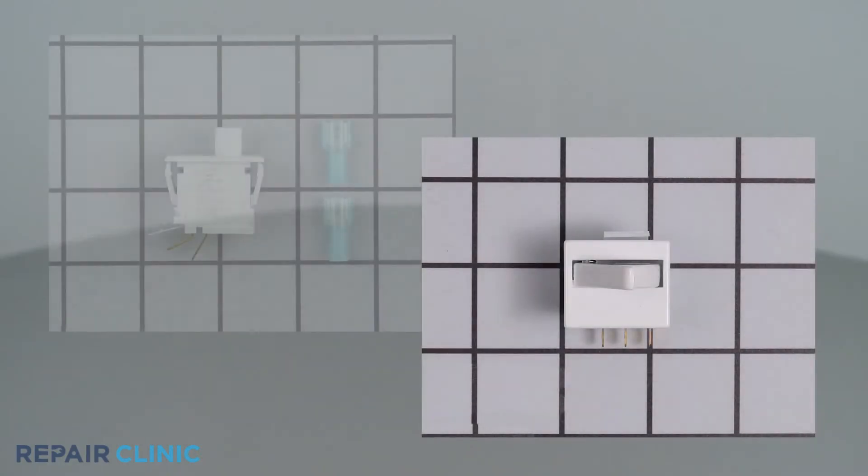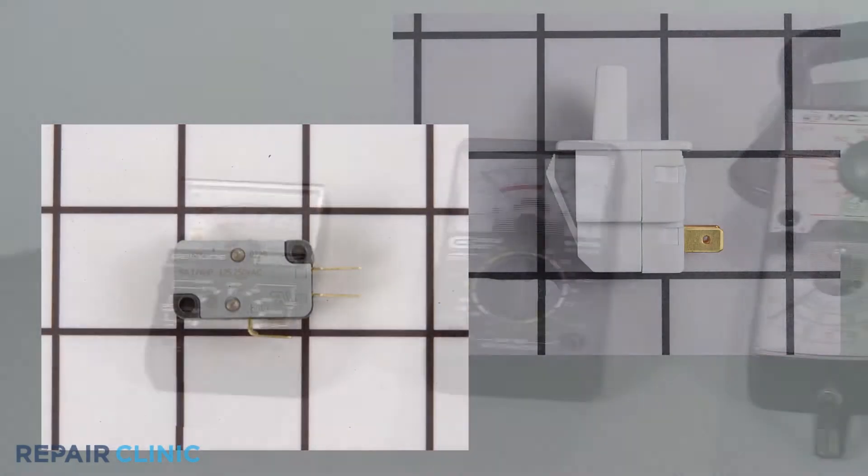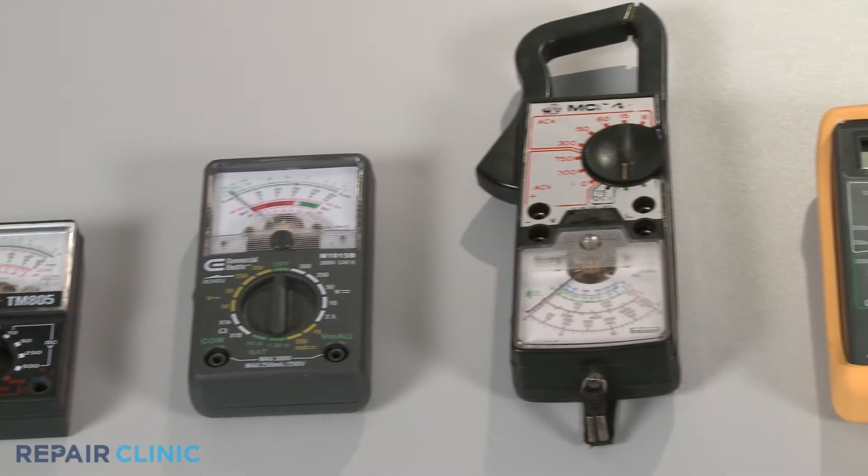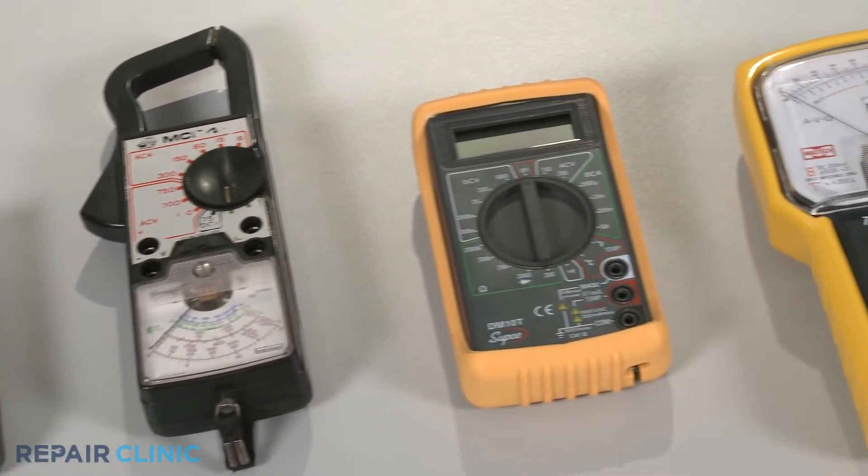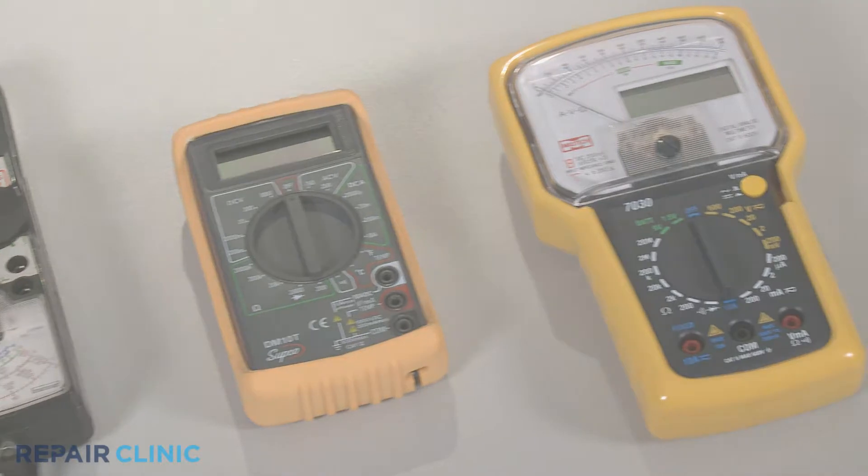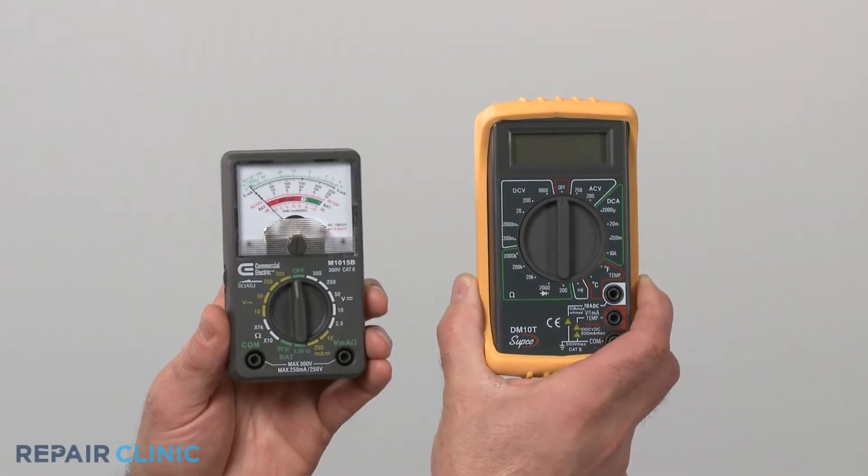Switches come in many shapes and sizes, but all of them can be tested for continuity, and you can choose from a variety of multimeters to perform the test. For this demonstration, we will use both analog and digital models.